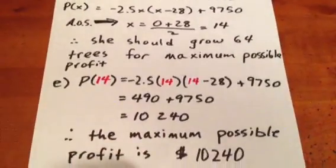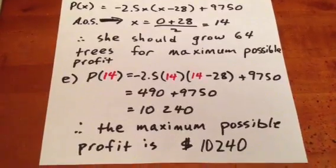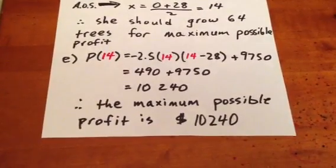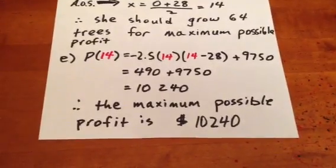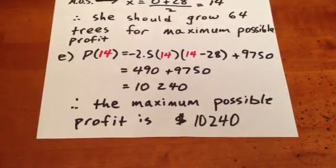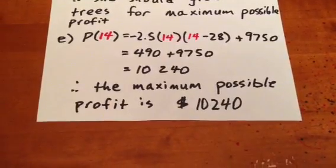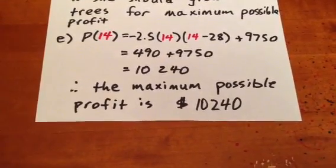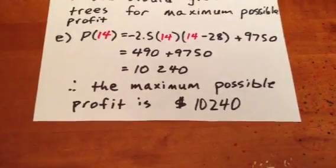We then want to determine what the maximum possible profit is, so we sub an X value of 14 into the profit formula. And when we do that, we evaluate it out to be $10,240, which means the maximum possible profit that our orchard owner can make under these conditions is $10,240. Thank you.